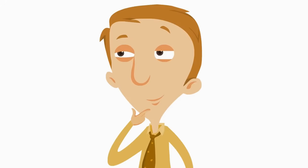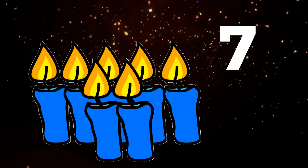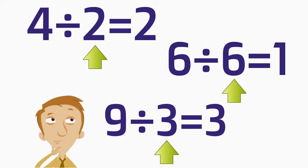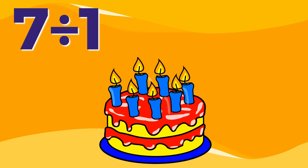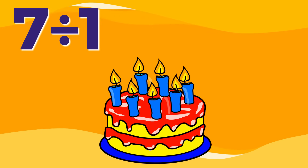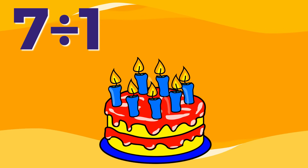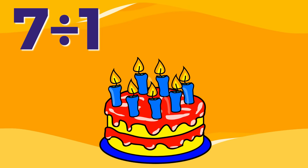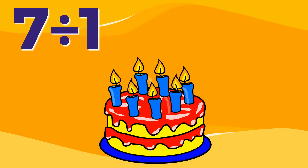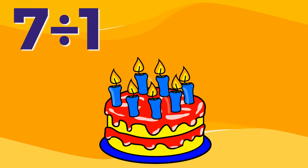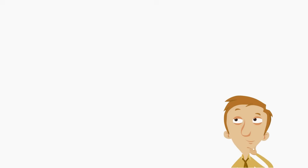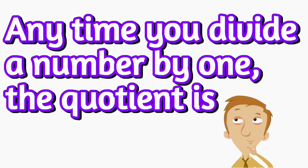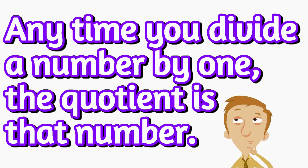Imagine we have seven candles — seven of them. In the other division examples, we divided a number into multiple groups. But in this example, we are only going to divide seven by one, because all of the candles are going on the same cake. Seven divided by one. There's just one group, and all seven candles are on it, so the answer is seven. Seven divided by one equals seven. Seven is the quotient.